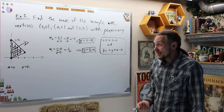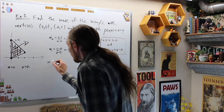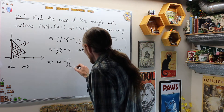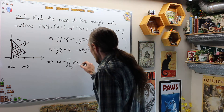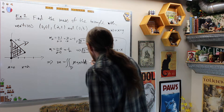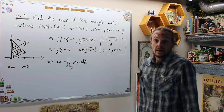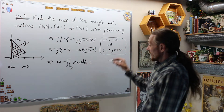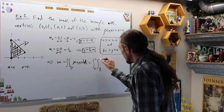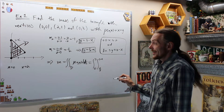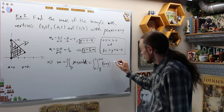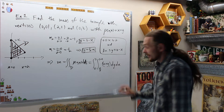These are my bounds for integration — I have a general region. The mass is equal to the double integral over region D of my density function ρ dA, and that gives me the integral from 0 to 2, the integral from x/2 to 3−x, of x+y — my density function — dy dx.